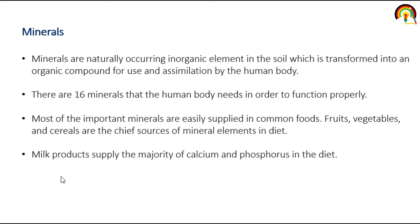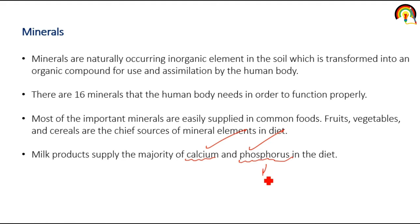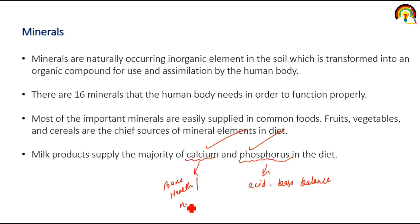Minerals are naturally occurring inorganic elements in the soil which are transformed into organic compounds for use and assimilation by the human body. There are 16 minerals that the human body needs in order to function properly, obtainable from fruits and vegetables. Milk products supply the majority of calcium and phosphorus in the diet. Calcium is mainly responsible for bone health and proper functioning of the nervous system, while phosphorus is mainly responsible for maintaining acid-base balance in the body.